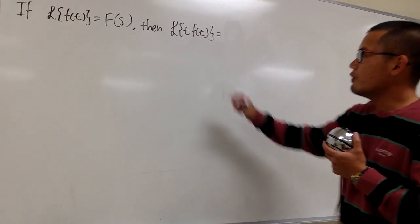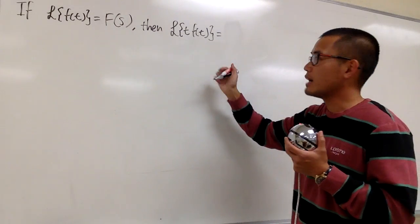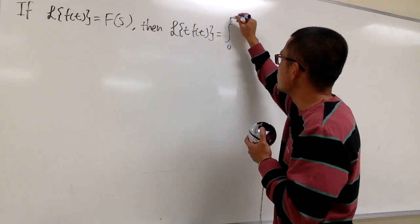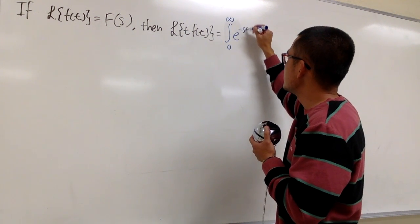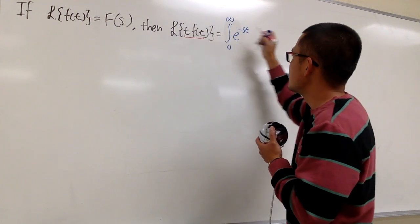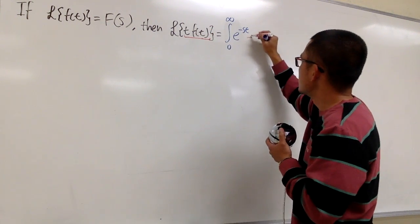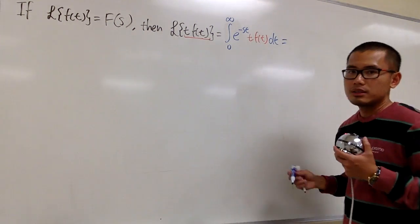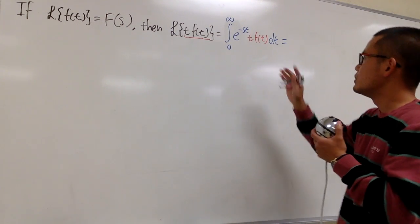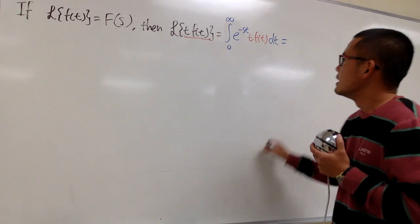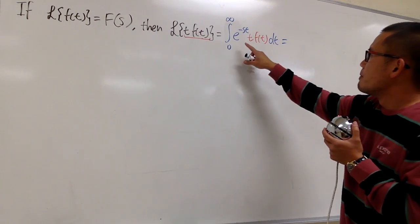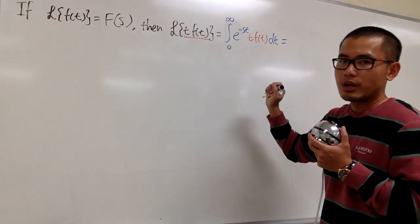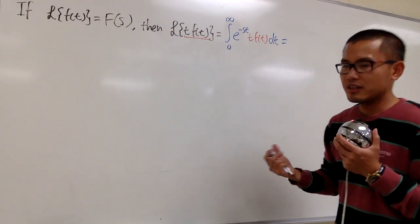Let me show you. First, write down the definition. We know this will be the improper integral from 0 to infinity of e to the negative st, times t times f(t), dt. Compared with the original — which has e to the negative st and f — we have this additional t here. That's the new thing.